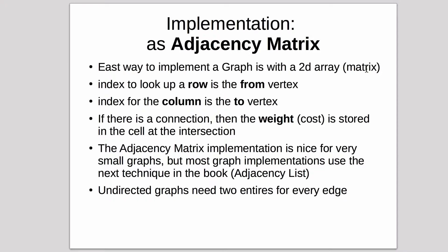And then that index number in turn looks up a row or a column. The rows are the from vertex and the columns are the to vertex. You'll see a diagram in the next slide which will make this clear. If there's a connection, then there's a weight or a cost stored in the cell at the intersection. If it's not a weighted graph, then you just store ones in all the edges in the matrix. The adjacency matrix is very nice for small graphs, but most graph implementations that are interesting are just too big for adjacency matrix.